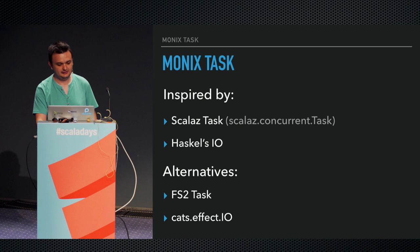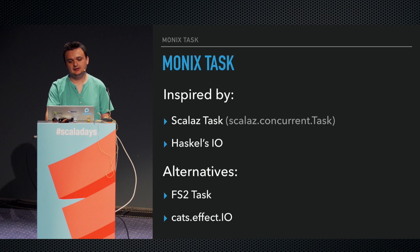Monix also has alternatives in the type-level ecosystem, such as FS2 task and the new cats-effect IO project. I'm also involved in that. Monix's task comes with certain advantages, as you'll see. But first, let's talk a little about evaluation.